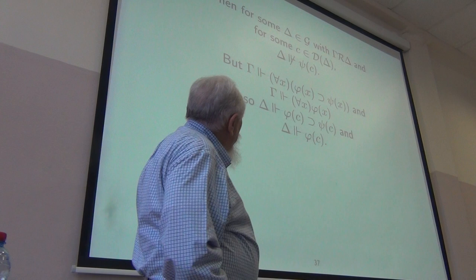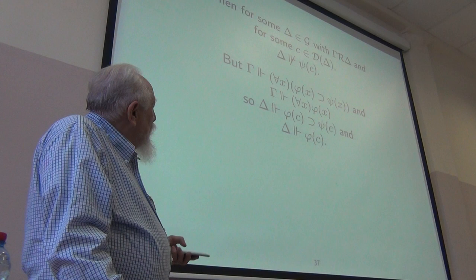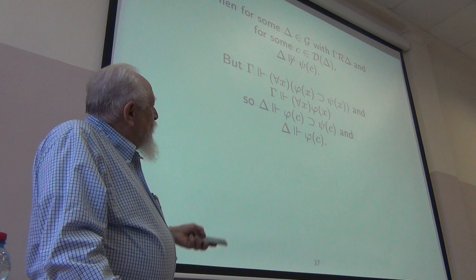Same thing for all x phi of x. Every instance has to be true at every accessible world. So phi of C is true at delta. So at delta you've got phi of C implies psi of C and you've got phi of C. So you've got psi of C, but up there you didn't. So this is a contradiction.